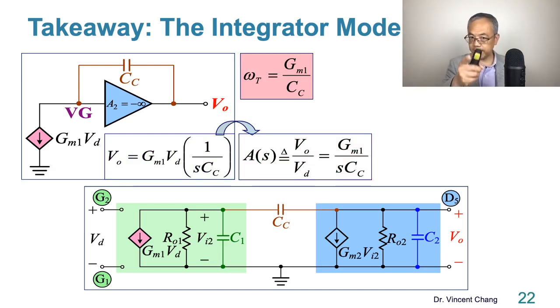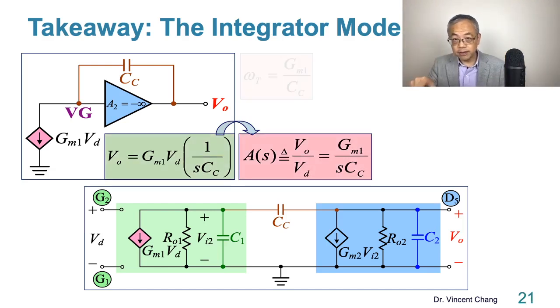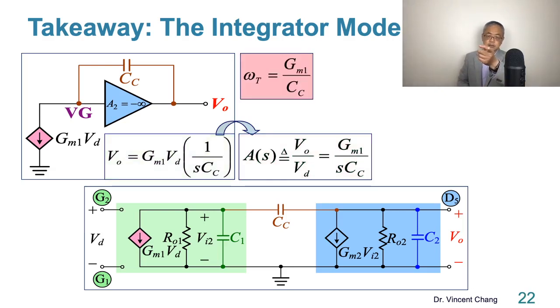And then if you command, if you let this gain equal to one, what is the corresponding frequency is going to be? It's going to be this. You let equals one and you get this, exactly the same. So to get the unit gain frequency, maybe you can skip this low frequency and the dominant frequency calculation. You can simply adopt the integrator model, quickly get this. This is also the major takeaway of this lecture.